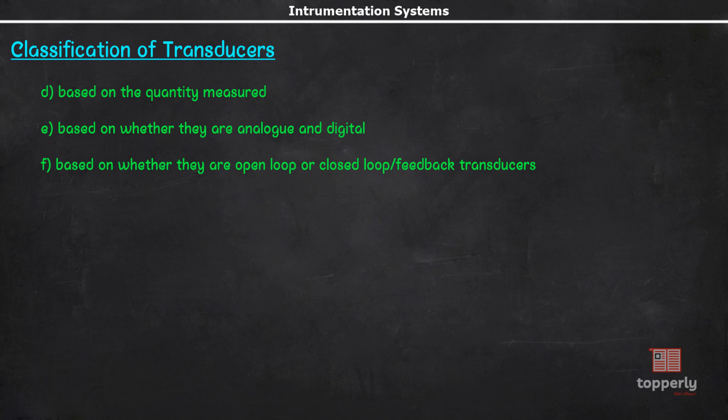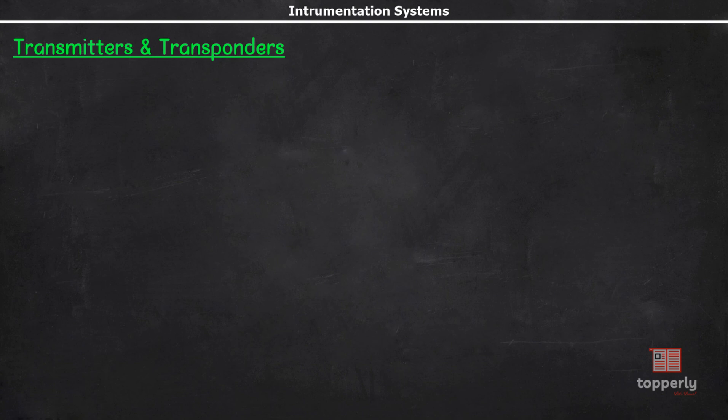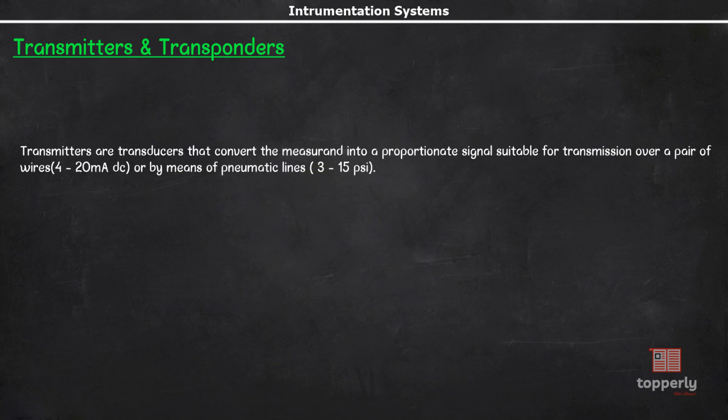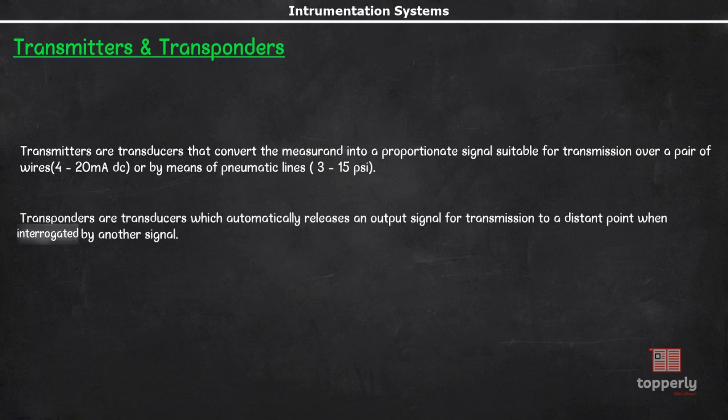Now, there are two terminologies that come under the topic of transducers which you should be familiar with. They are transmitters and transporters. Transmitters are transducers that convert the measurand into a proportionate signal suitable for transmission over a pair of wires or by means of pneumatic lines. Meanwhile, transporters are transducers which automatically release an output signal for transmission to a distant point when interrogated by another signal. An example is an RFID device which transmits a coded signal when it receives a request from a monitoring or control point.